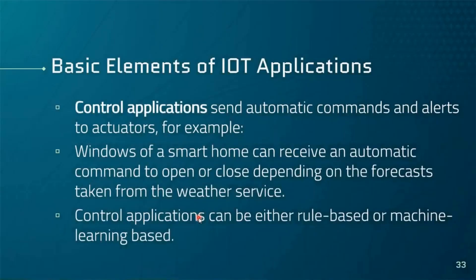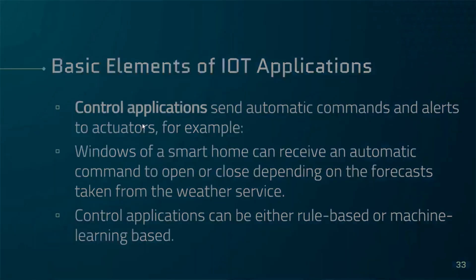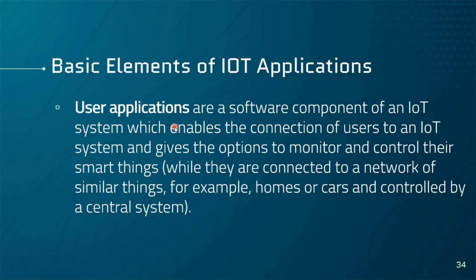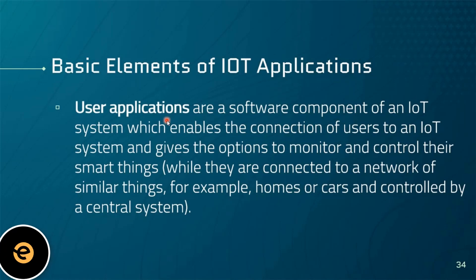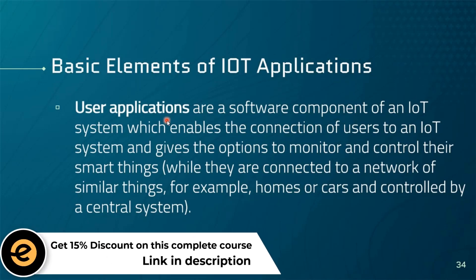Control applications send automatic commands and alerts to actuators. It's important to distinguish them from user applications. User applications are what users interact with — to control devices, control actuators, and view results and data. Control applications are back-end applications used within the cloud-to-device operation — for example, the cloud telling a device to switch an appliance on or off.